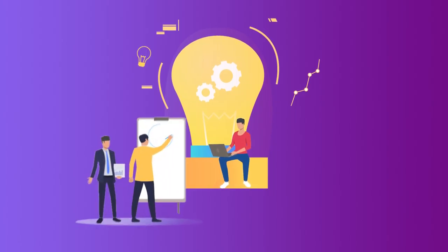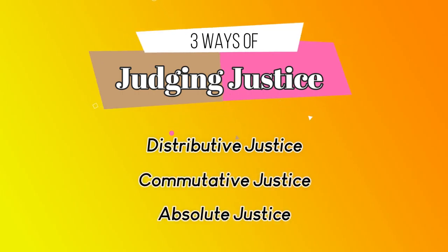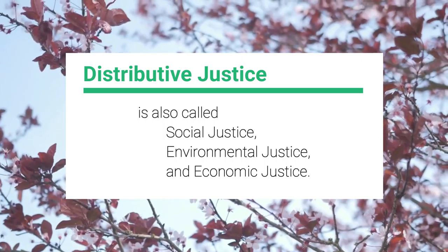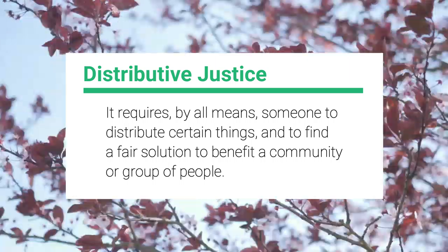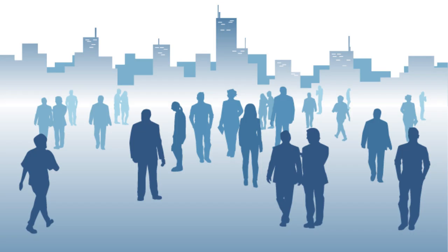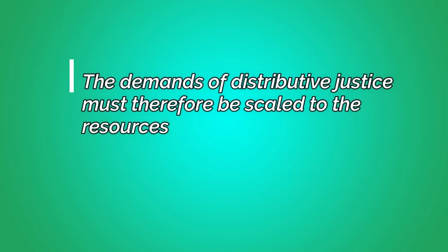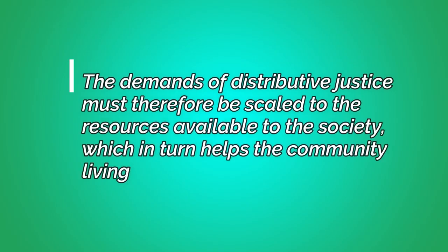Throughout the development of social-related thinking, we came to the conclusion that we have three ways of judging justice. Distributive justice is also called social justice, environmental justice, and economic justice. It requires someone to distribute certain things and to find a fair solution to benefit a community or group of people. For example, in a society there simply may not be enough food, shelter, or healthcare to go around, depending on the wealth level of a society. The demands of distributive justice must therefore be scaled to the resources available to the society, which in turn helps the community living in the area.